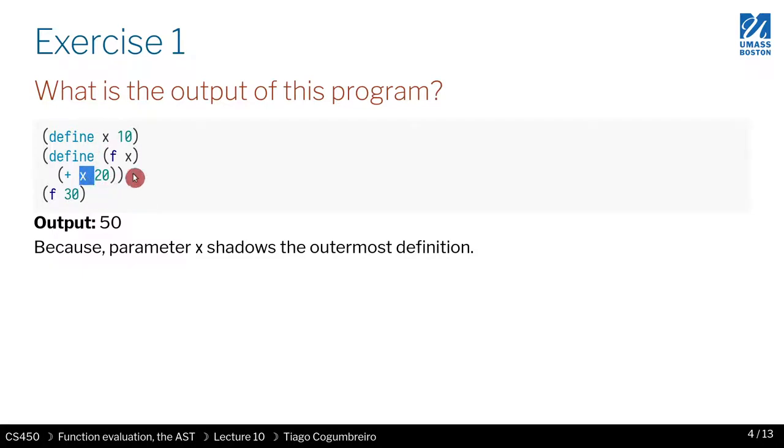The crucial point here that I want you to understand is that the variable x is always assigned to the closest definition. In this case, what is the closest definition? That would be this x right here, and not the outermost x.